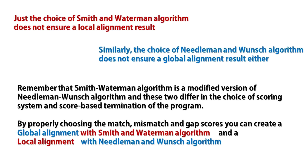Although a computer program based on the Smith-Waterman local alignment algorithm is used for producing an optimal alignment, this does not assure that a local alignment will always be produced. The scoring matrix, match and mismatch scores, and the gap penalties chosen to perform the alignment also influence whether or not a local alignment will be obtained. Similarly, a program based on the Needleman-Wunsch algorithm can also return a local alignment depending on the weighting of end gaps and other scoring parameters.